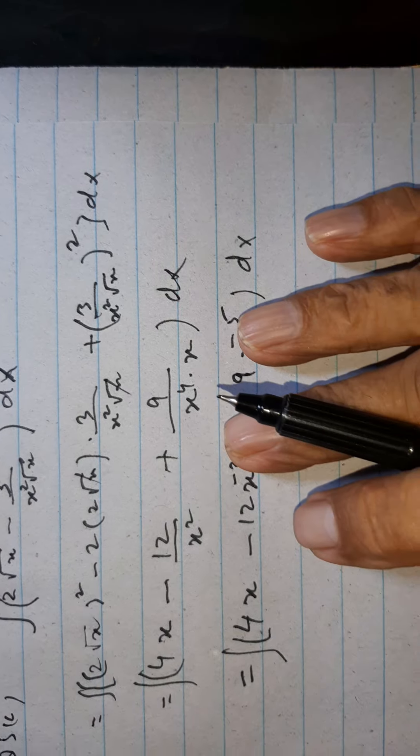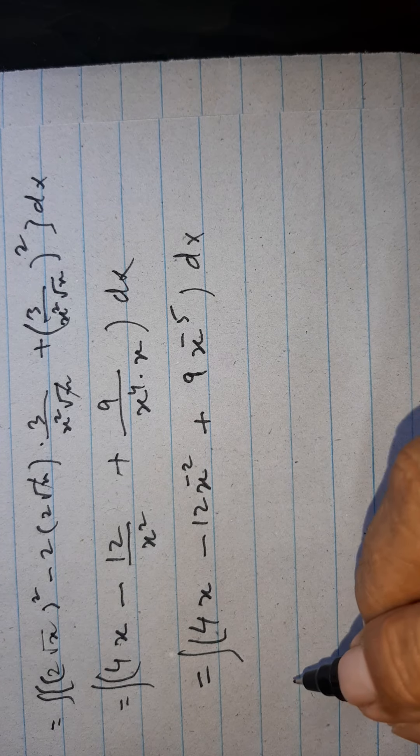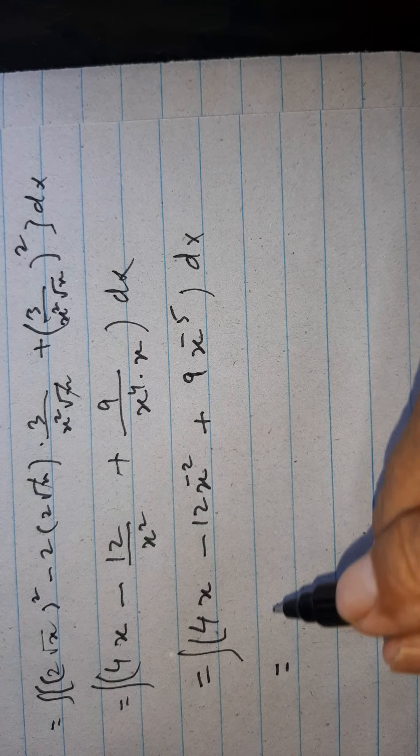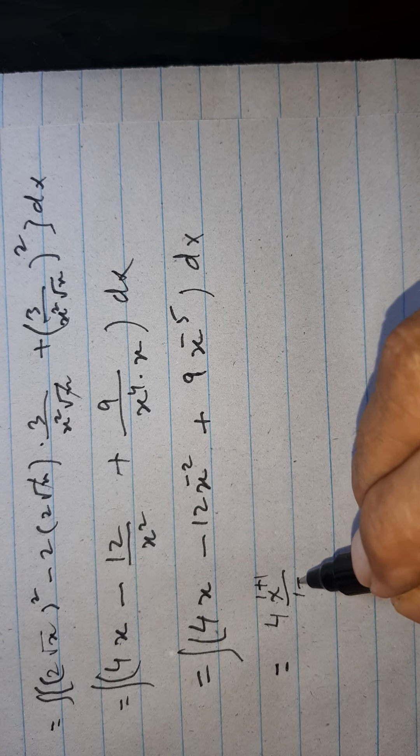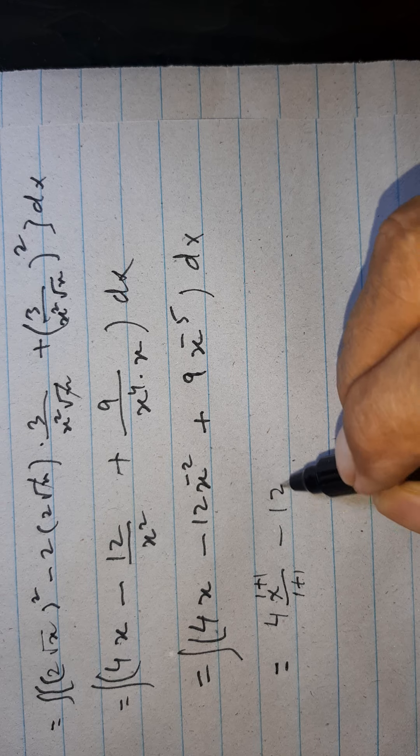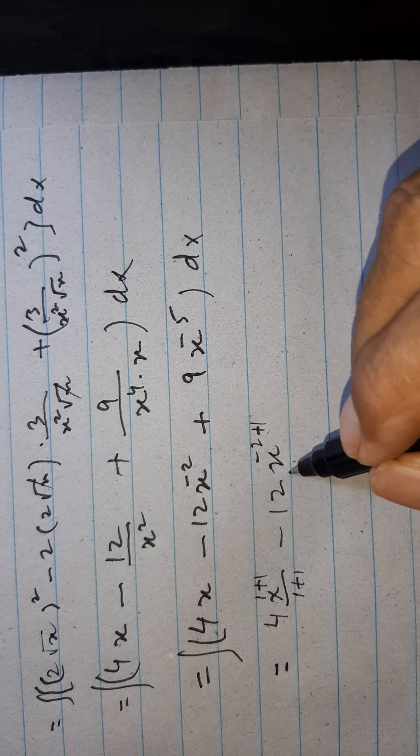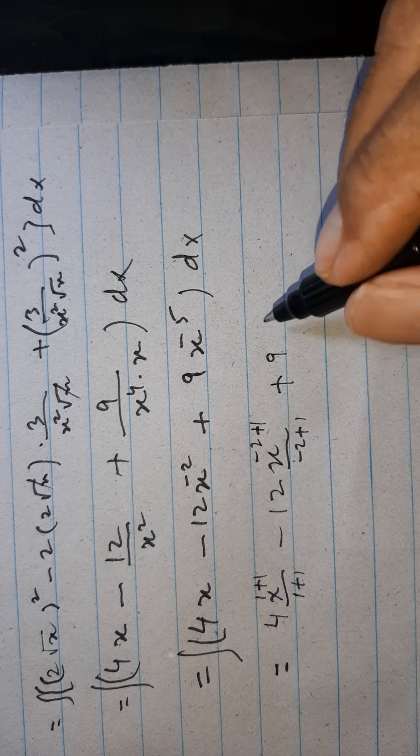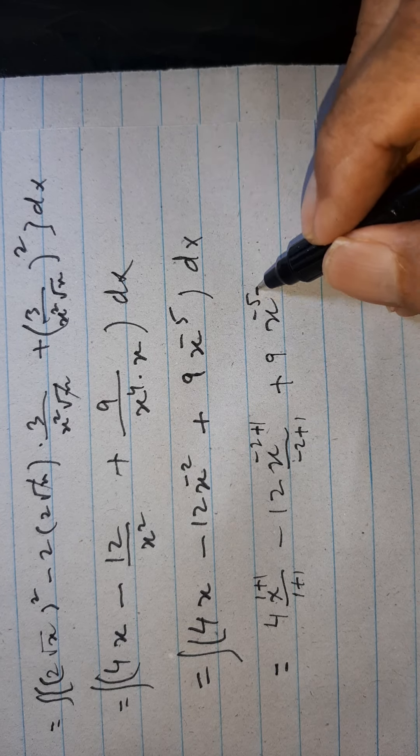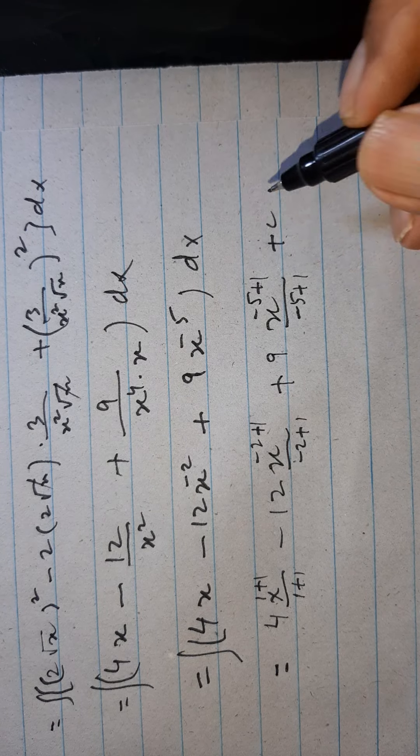dx. Here we can now integrate, and this will be 4 x power 1 plus 1 over 1 plus 1, minus 12 x power minus 2 plus 1 over minus 2 plus 1, plus 9 x power minus 5 plus 1 over minus 5 plus 1, plus c constant of integration.